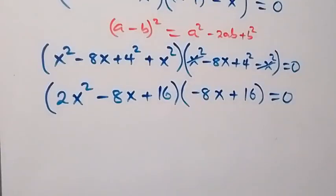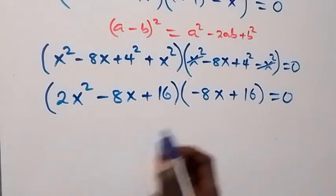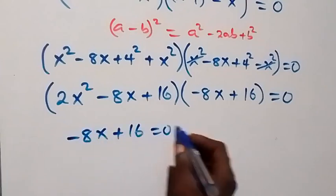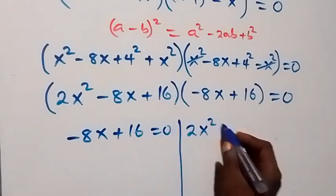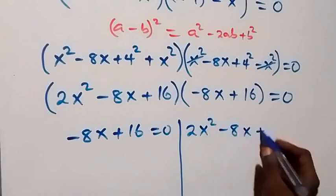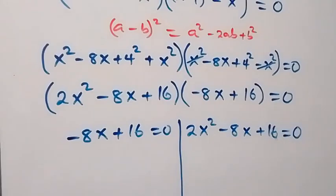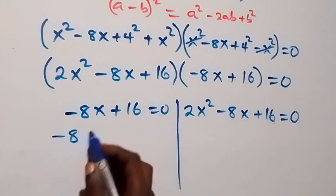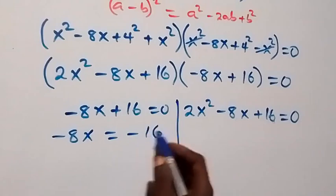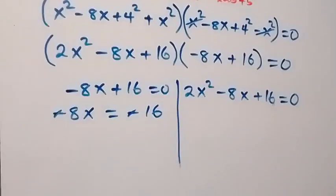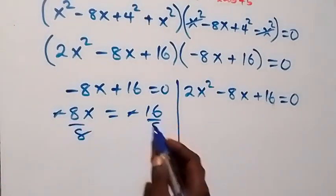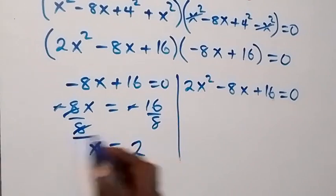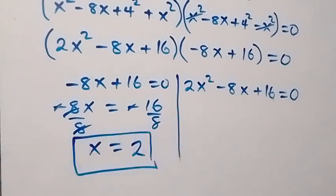Now we have two cases. The first case: minus 8x plus 16 equals to 0. Taking 16 to the other side gives minus 8x equals minus 16. The negatives cancel and dividing by 8 gives x equals 16 over 8, which is 2. So we have a solution x equals 2.